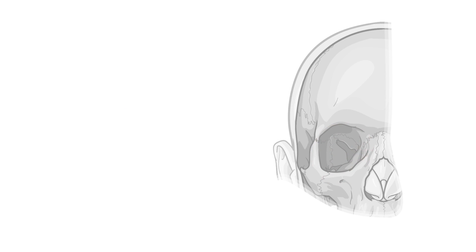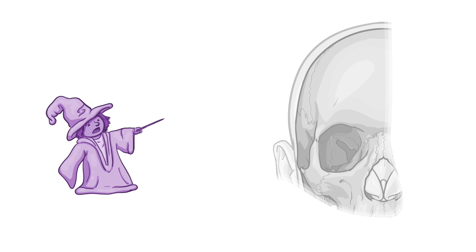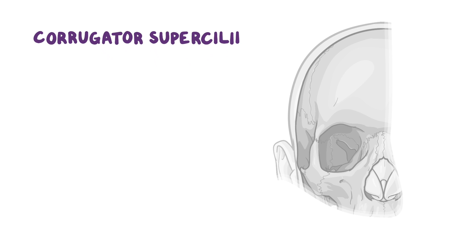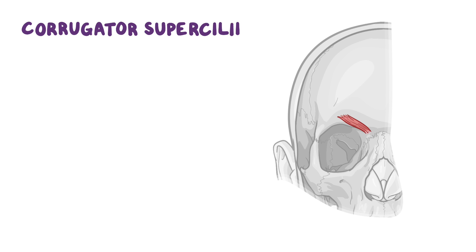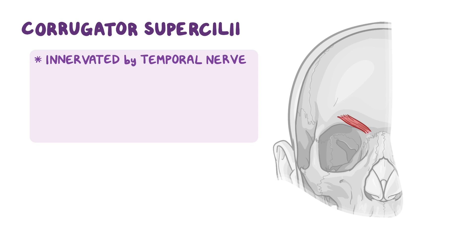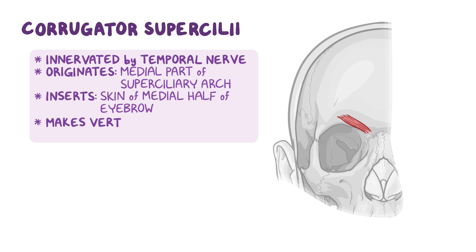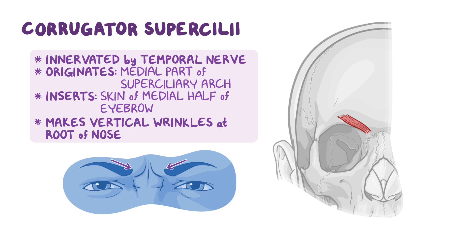The muscle of the eyebrows is called the corrugator superciliae, a small muscle found deep in the eyebrows, innervated by the temporal nerve. It originates on the medial part of the superciliary arch and extends laterally to insert onto the skin of the medial half of the eyebrow. When it contracts, it pulls the eyebrows medially and inferiorly, making vertical wrinkles at the root of the nose, which occurs when frowning.